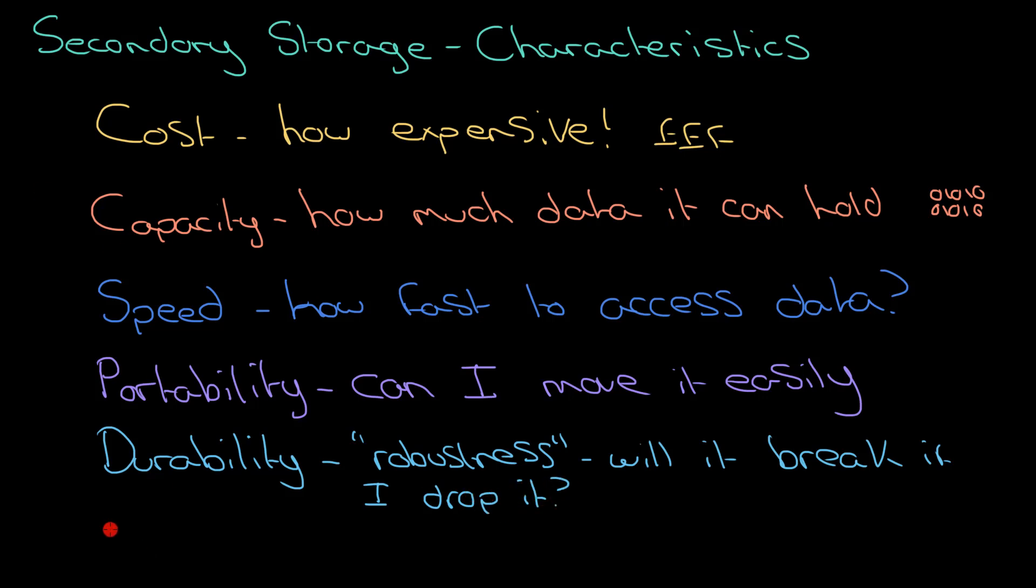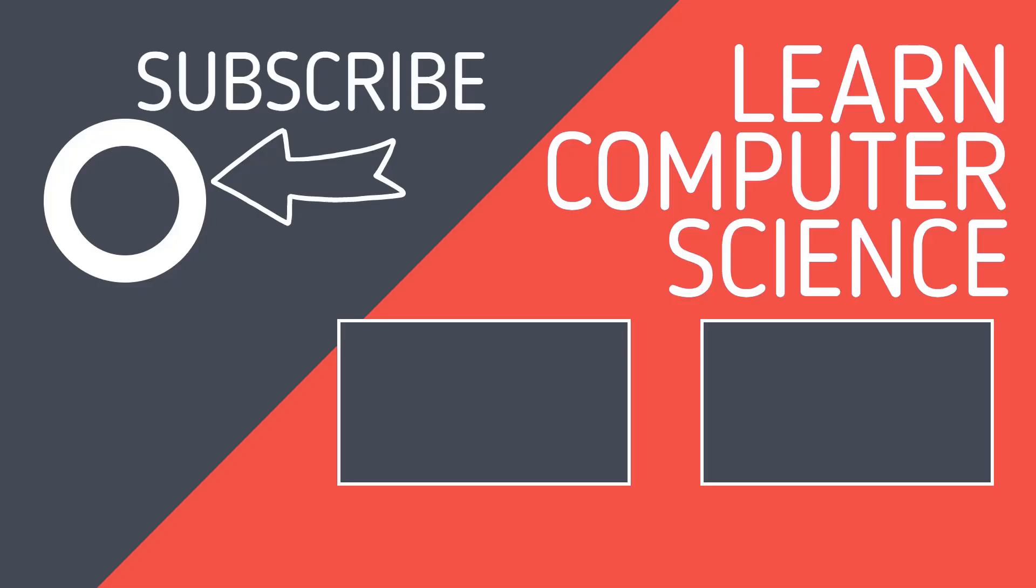Last one, reliability. So this is more like, if I leave it on a shelf for a long period of time, will it still work? That's what we're looking for. And these words are important, okay? So if you remember these words, these are the words we need to use to describe different types of secondary storage.